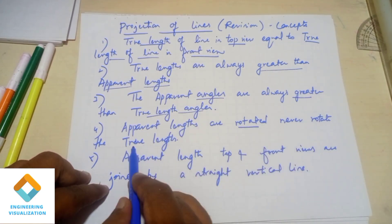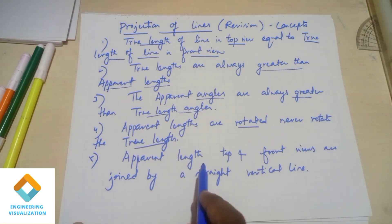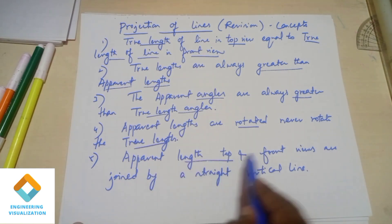The apparent angles are always greater than the true length angles. The apparent lengths are always rotated. We never rotate the true lengths.